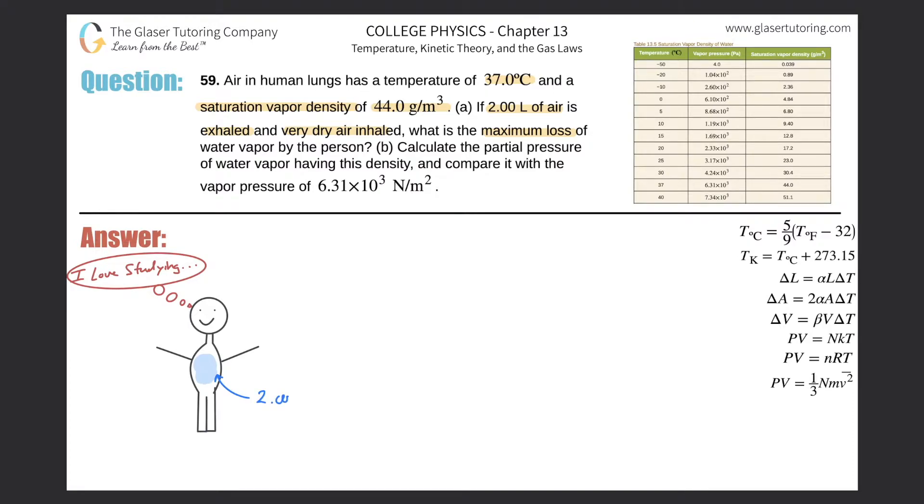We probably need to do a conversion. We remember that there are 1000 liters for every one cubic meter, so we can cancel those liters and this becomes 0.002 cubic meters. That would be the volume.